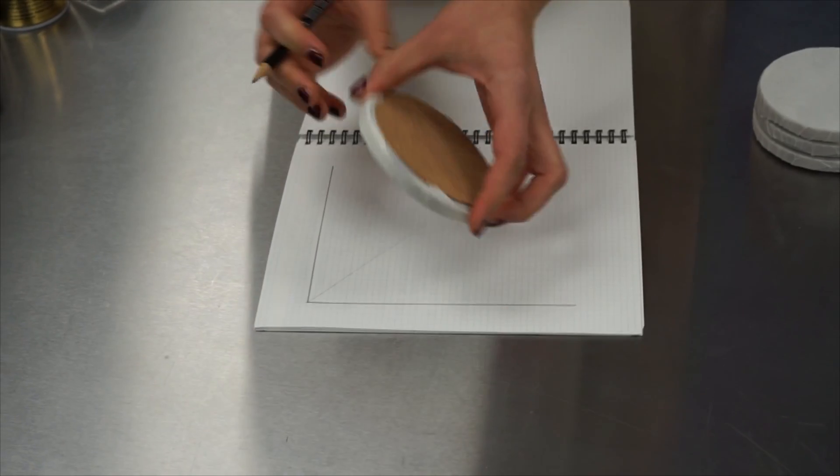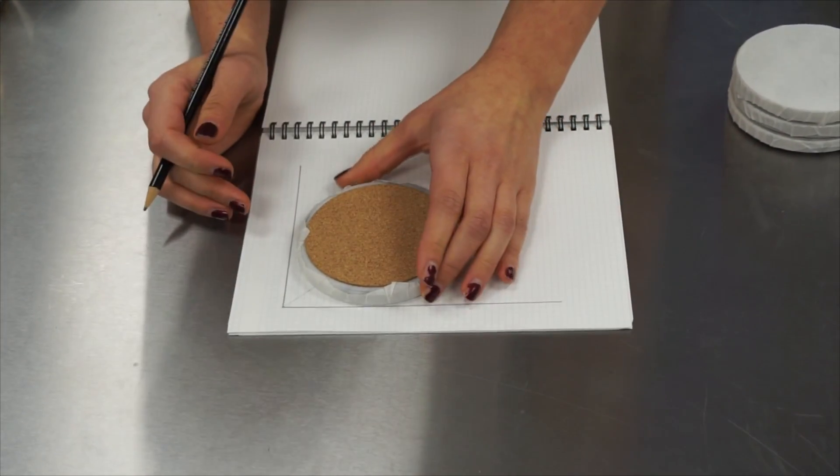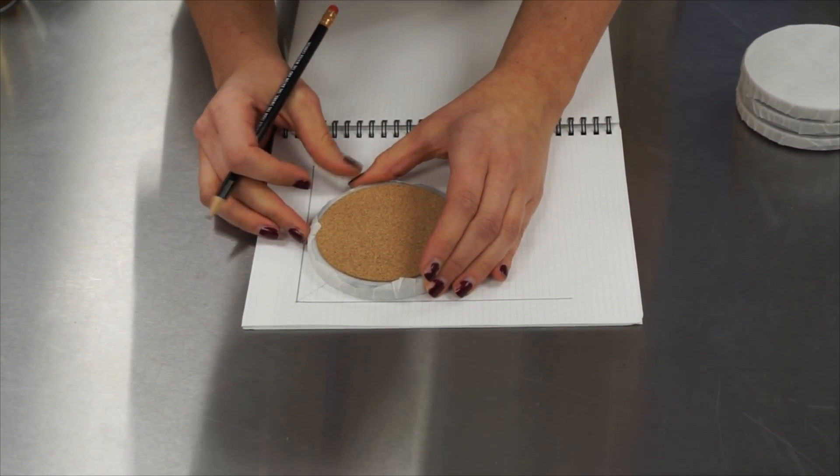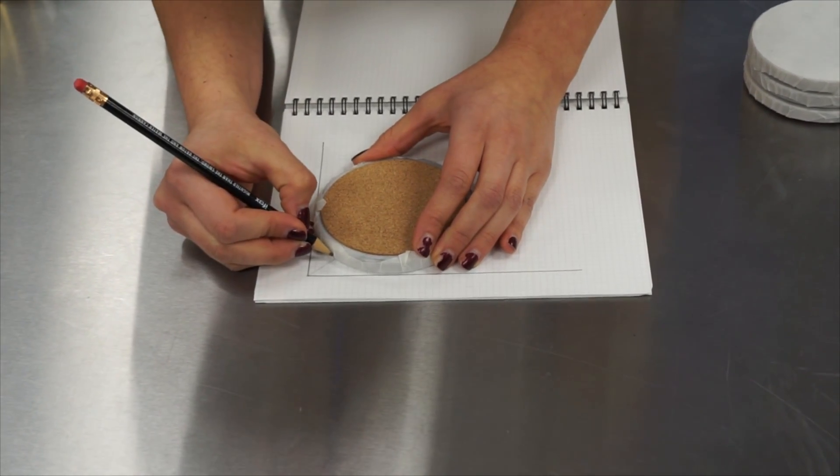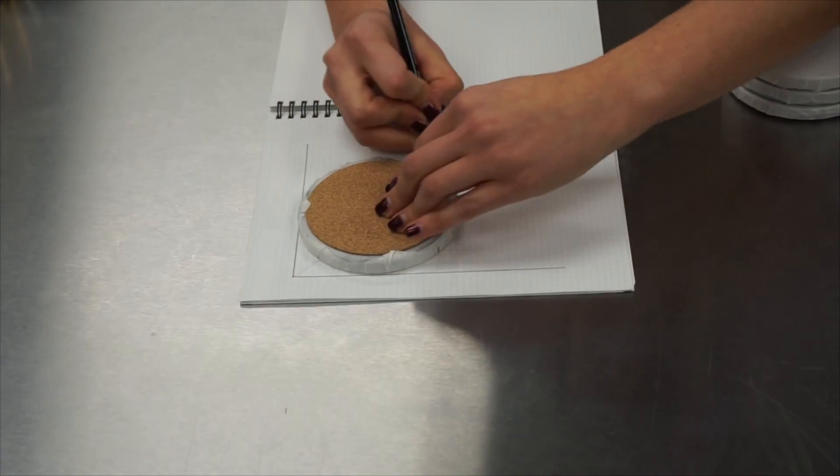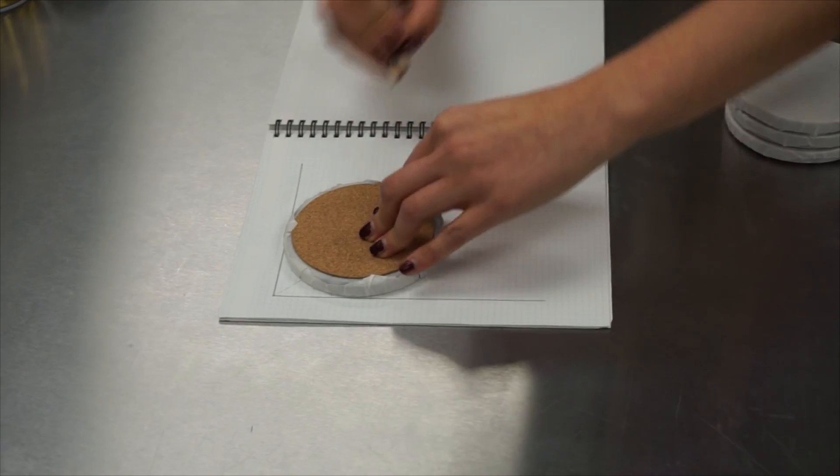You then take the coaster, turn it approximately 90 degrees, again line it up to the two sides and mark the 45 on one side and on the other side.